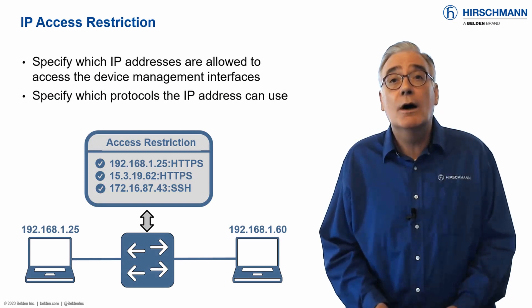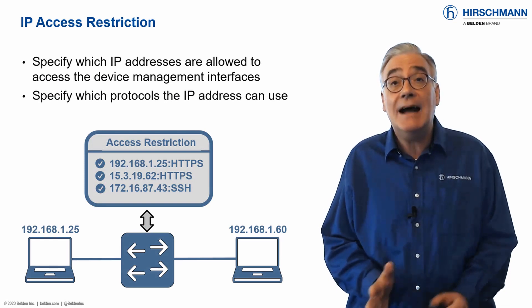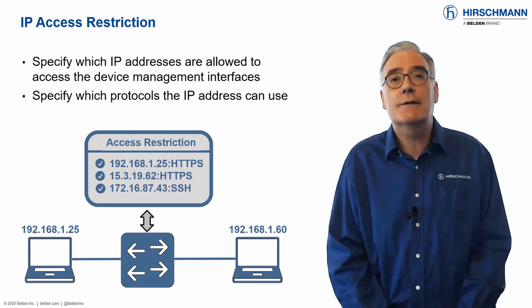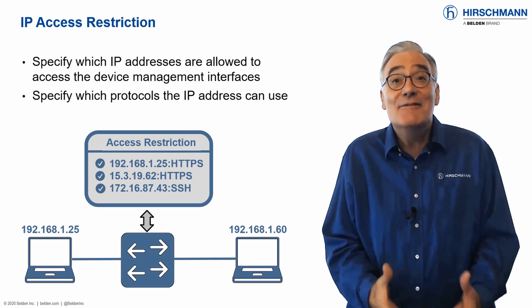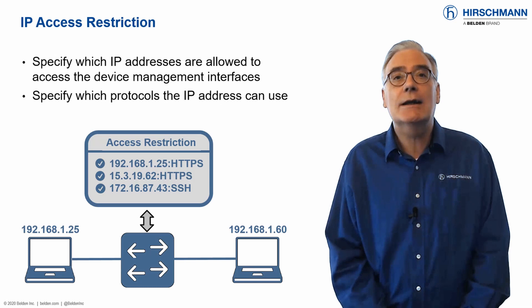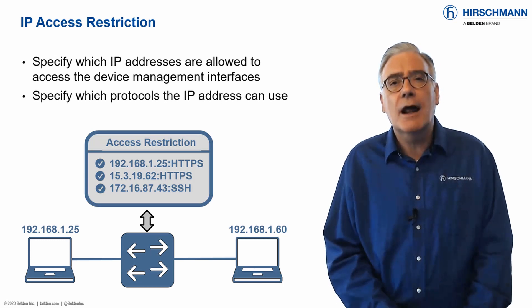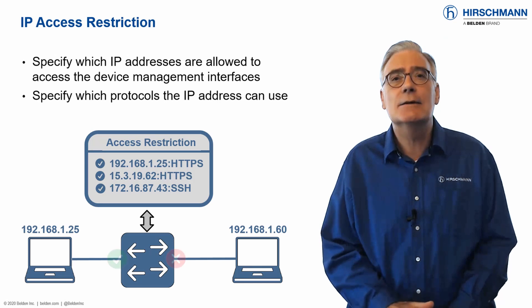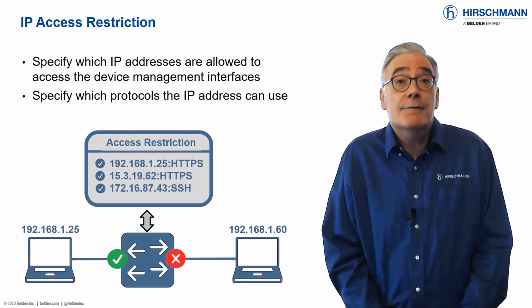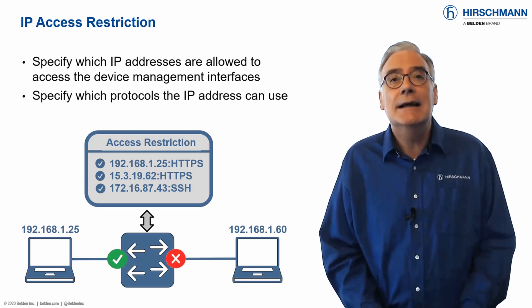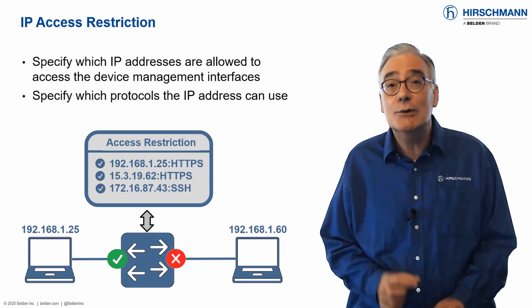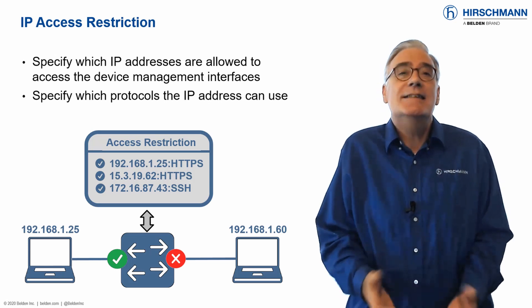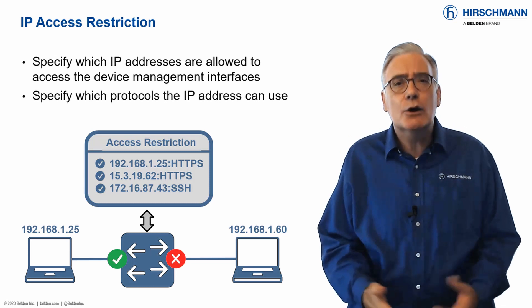By default, your network infrastructure devices can be accessed from any PC attached to the network. This is convenient when commissioning your network. But for live operation, it makes sense to limit access. A simple and effective way to achieve this is to restrict access to specified IP addresses — typically PCs under your control.